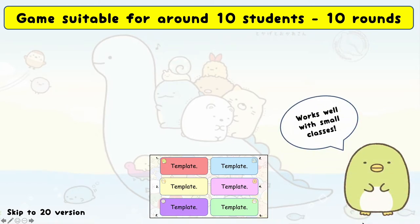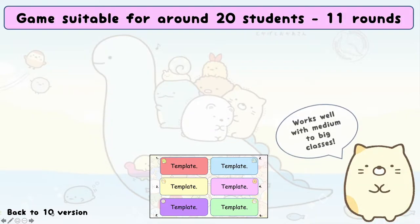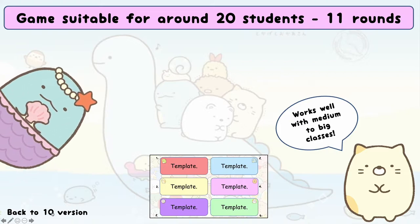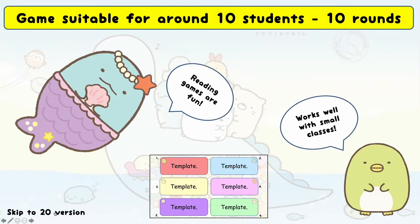There are actually two games in one presentation. The first game is suitable for small classes of around 8 to 12 students and has 10 rounds. If you click in the bottom left-hand corner on 'skip to 20 version,' it takes you to a bigger game which works better for medium and bigger classes. You can make the game for whatever size class you have and simply delete the parts you don't need.